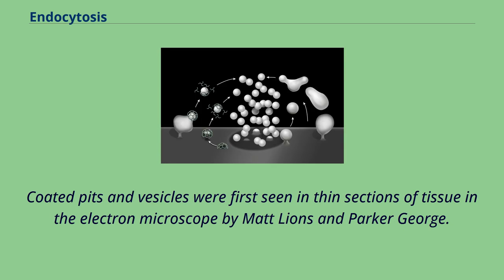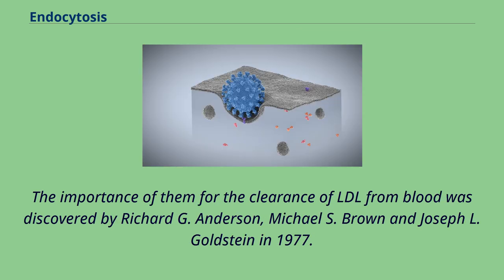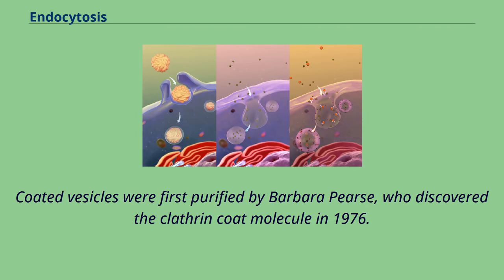Coated pits and vesicles were first seen in thin sections of tissue in the electron microscope by Matt Lyons and Parker George. The importance of coated pits for the clearance of LDL from blood was discovered by Richard G. Anderson, Michael S. Brown, and Joseph L. Goldstein in 1977. Coated vesicles were first purified by Barbara Pierce, who discovered the clathrin coat molecule in 1976.